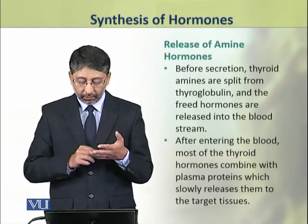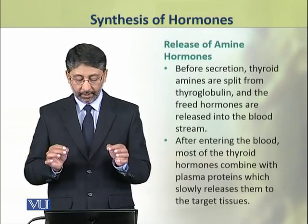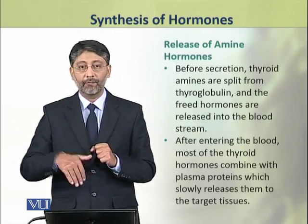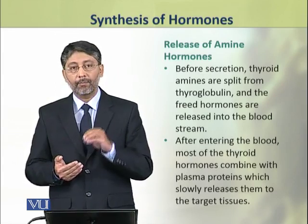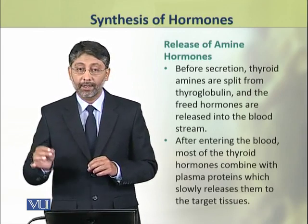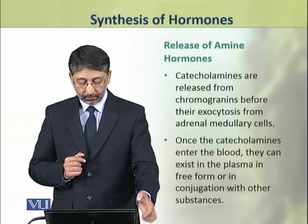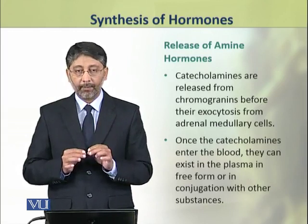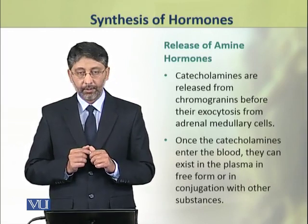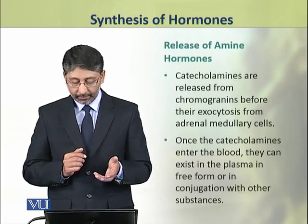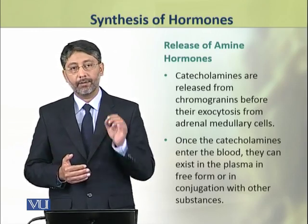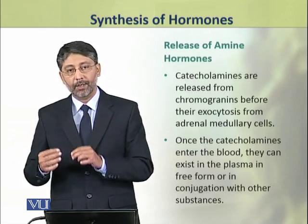Thyroid amines are cleaved from thyroglobulin and the freed hormones are released into the blood. When these thyroid hormones enter the blood, they again combine with plasma proteins, which slowly release them in their target tissues. Similarly, catecholamines are released from chromogranins before their exocytosis from adrenal medullary cells. When these catecholamines enter the blood, they can exist in the plasma in free form or they bind with other substances.